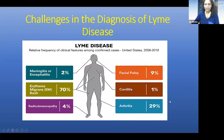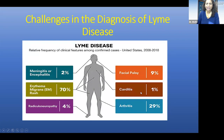In terms of the clinical manifestations, really the most common is the erythema migrans rash, which is seen in 70% of patients, followed by arthritis, and then some of the neurologic complications like facial palsies, neuropathy, and meningitis. Carditis is fairly uncommon, but we do see it and it's important to look for it.